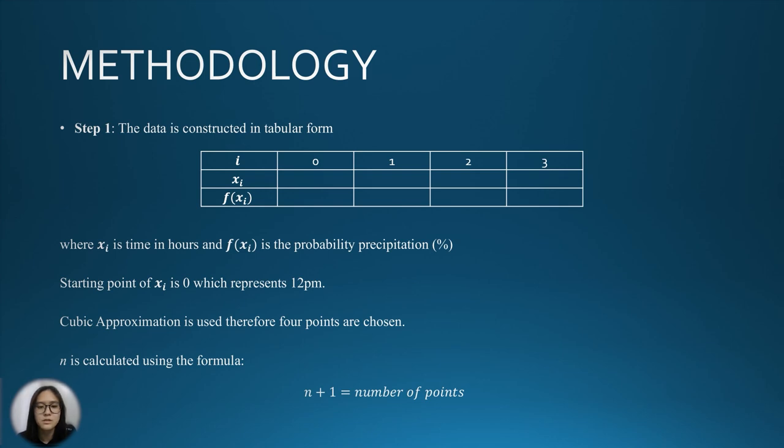Cubic approximation is used, therefore 4 points are chosen, so n is calculated using the formula n+1 equal number of points.